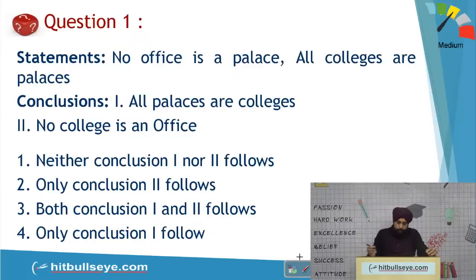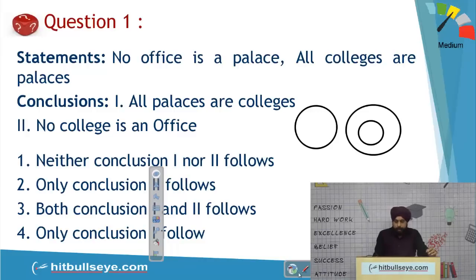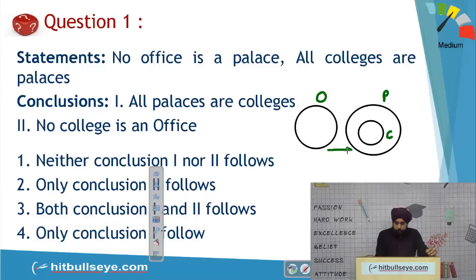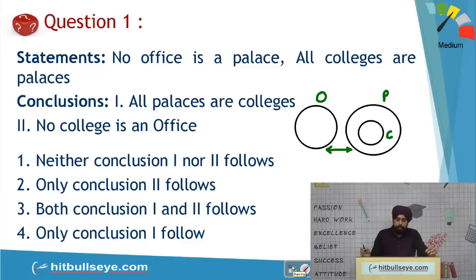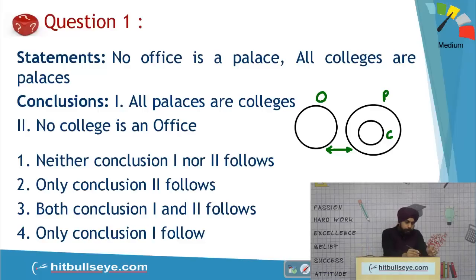The first question states: 'No office is a palace' and 'All colleges are palaces.' This means the two bigger circles — offices and colleges — will not overlap at all. Conclusion 1, 'All palaces are colleges,' is not necessarily true. Conclusion 2, 'No college is an office,' is absolutely correct since O and C are two non-intersecting circles. Answer: Conclusion 2 follows.